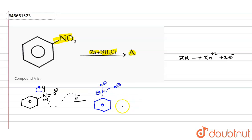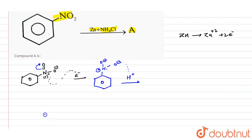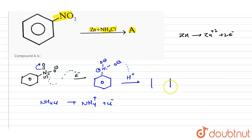In the next step, this oxygen donates its negative charge, and H⁺ comes from NH4Cl. NH4Cl breaks into NH4⁺ and Cl⁻, and NH4⁺ further breaks into NH3 and H⁺. This H⁺ is donated, converting the oxygen into an OH group.